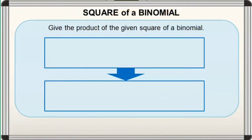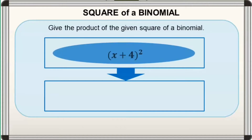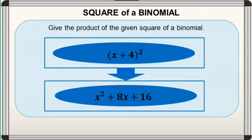We'll start with this simple activity. Give the product of the given square of binomial. For the first one, it is equal to x squared plus 8x plus 16.